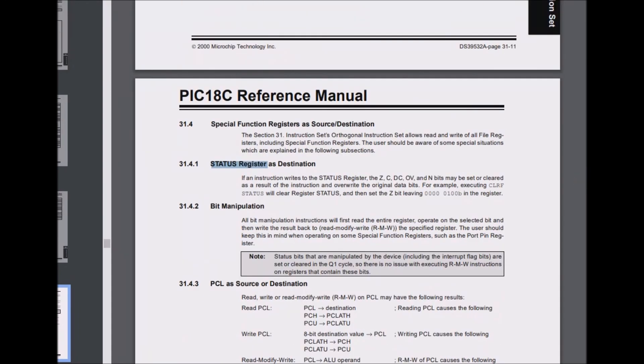This is dealing with the actual status register, so I'll read it. Status register as destination: If an instruction writes to the status register, the Z, C, DC, OV, and N bits may be set or cleared as a result of the instruction and overwrite the original data bits. For example, executing CLRF status will clear register status and then set the Z bit, leaving 00000100B in the register.